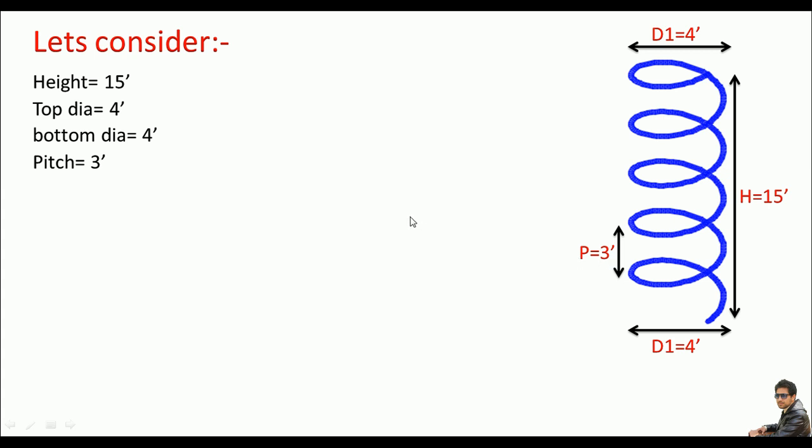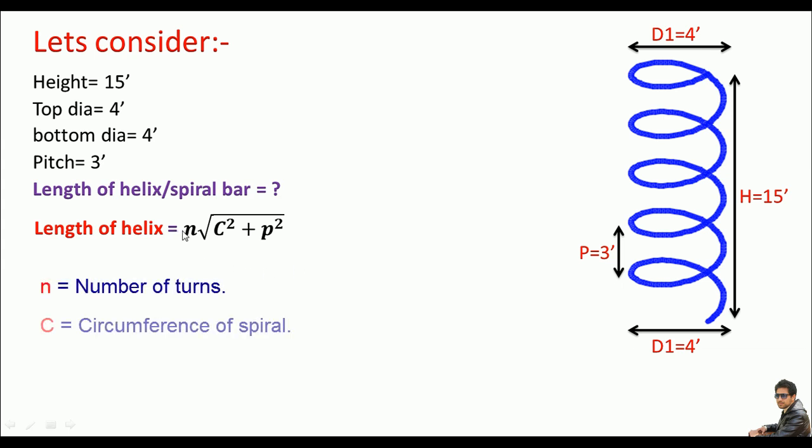Now what's the length of given spiral bar? For this approach I can use a formula like n times square root of c square plus p square. Here n represents the number of turns, c is the circumference of spiral bar and p represents the pitch.